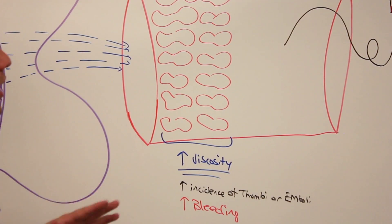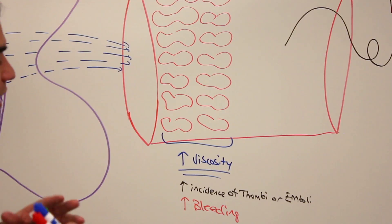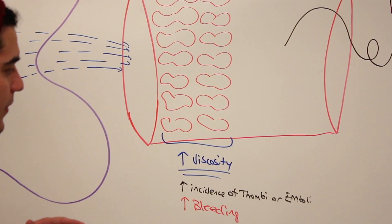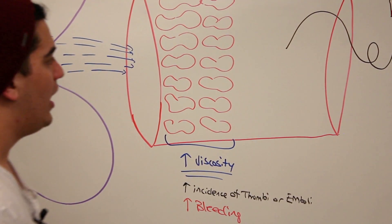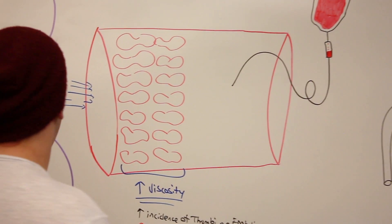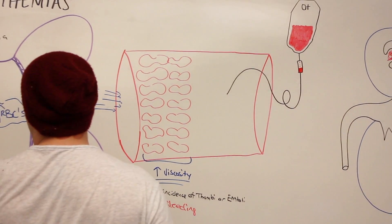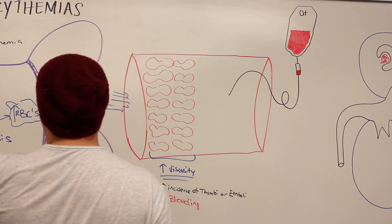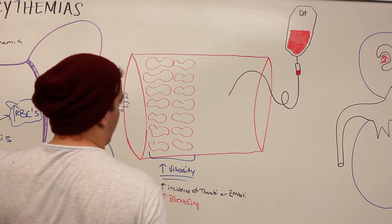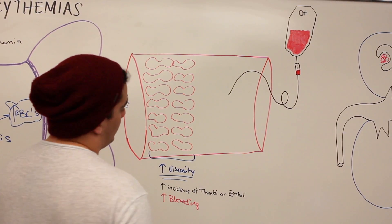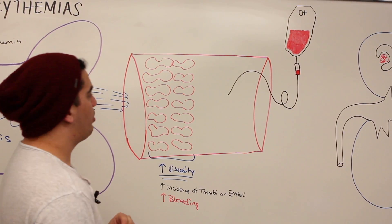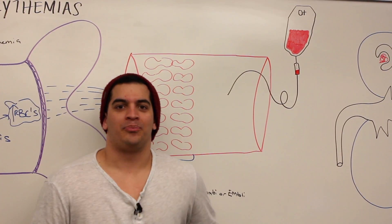So that's polycythemia vera in a nutshell — increased viscosity, increased incidence of thrombi or emboli, and more frequent bleeding. Obviously with this, you'd have to provide some type of drug to be able to control the EPO hyperfunctioning.